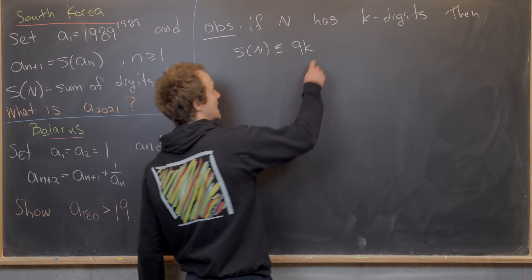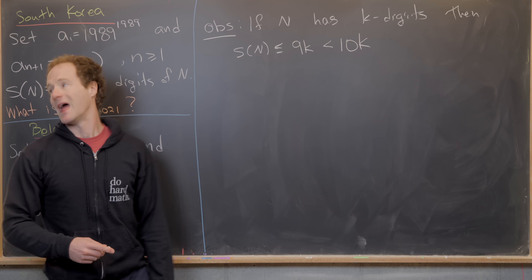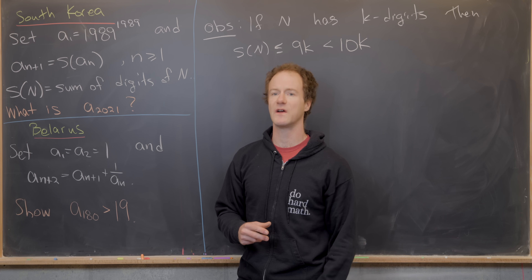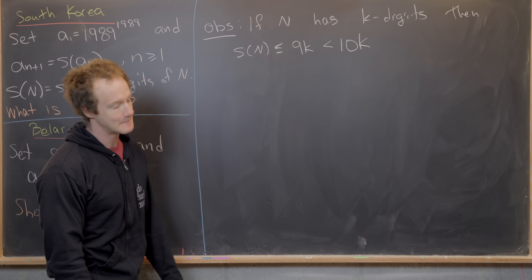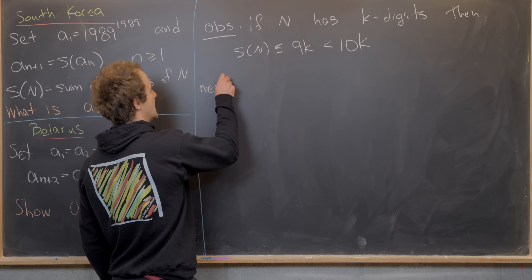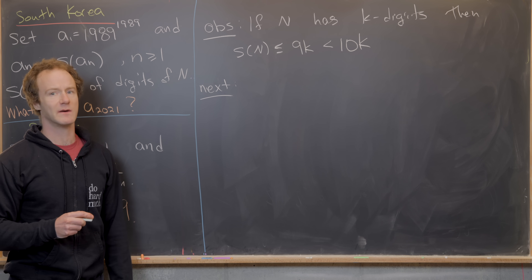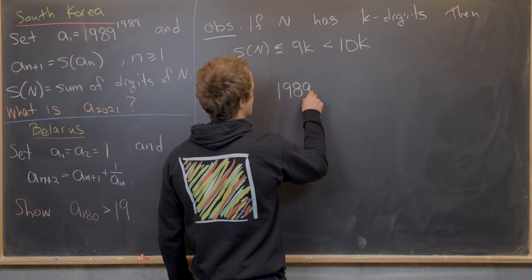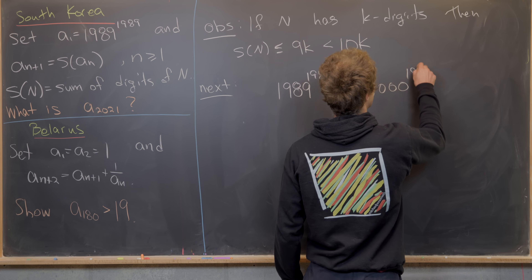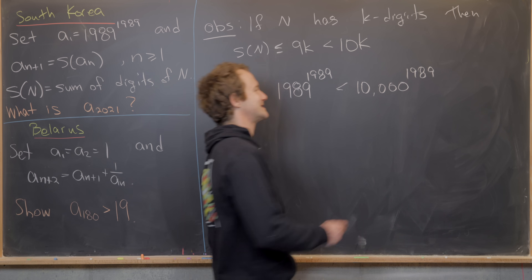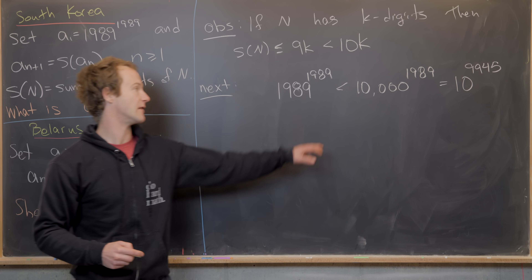Nine times K is strictly less than 10 times K. We're going to use very loose inequalities here, because this sum-of-digits function converges very quickly with repeated applications, and we're repeating 2021 times so we don't need to be careful. We bound 1989 to the 1989 above by 10,000 to the 1989, which equals 10 to the 9945, since 1989 times 5 equals 9945.